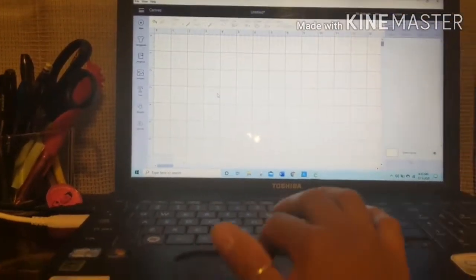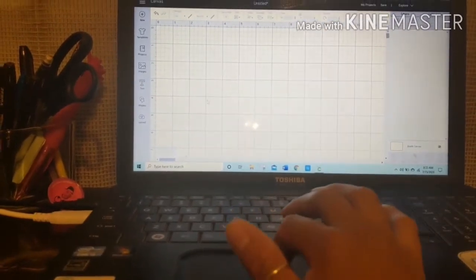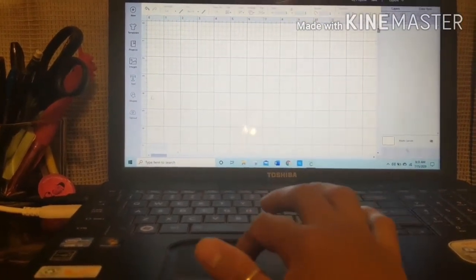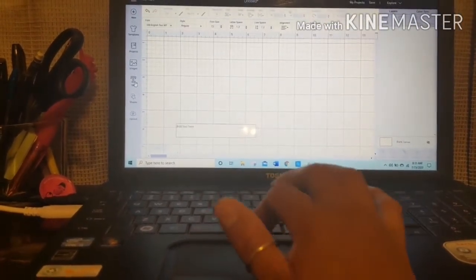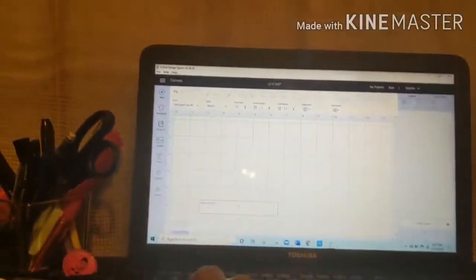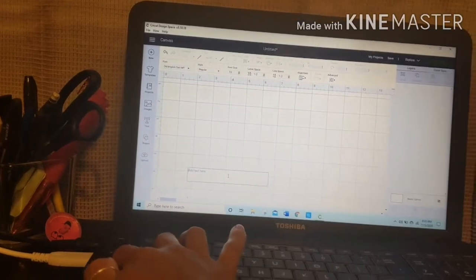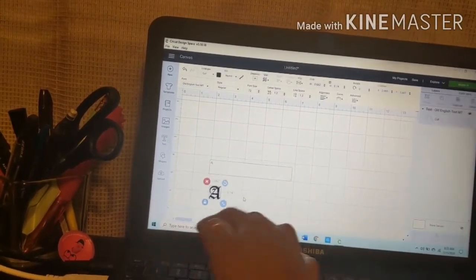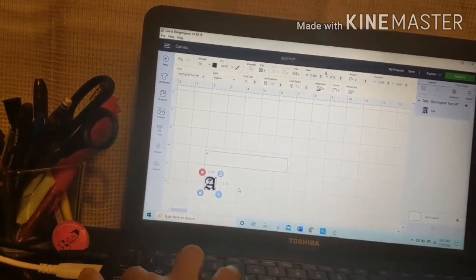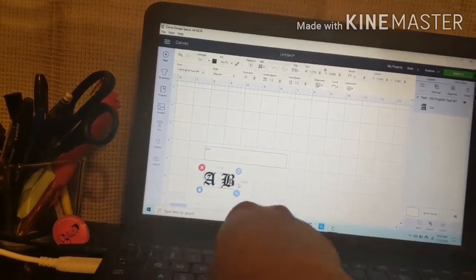So here is your Cricut Design Space, how it is when you first open it up. And so we're going to hit text. Now we're going to be doing some Old English font. So we're going to hit just hit with the regular A. We're going to space it out. Let's hit caps lock.